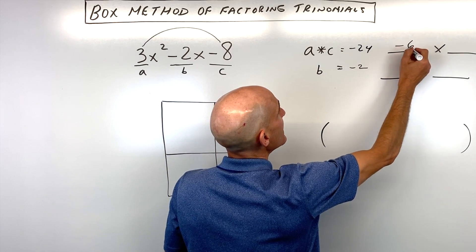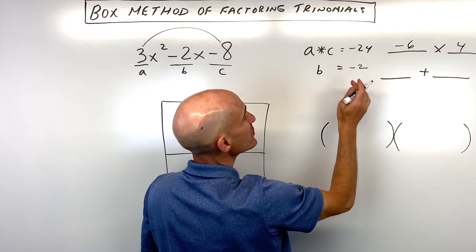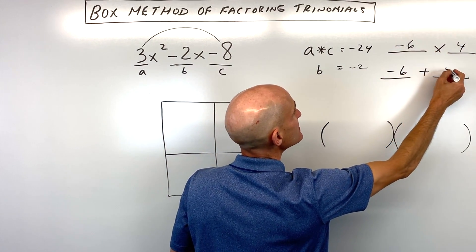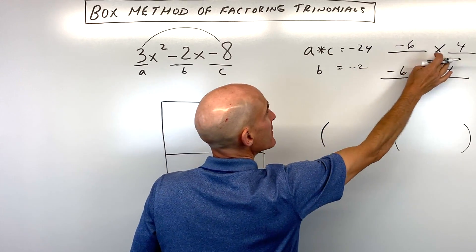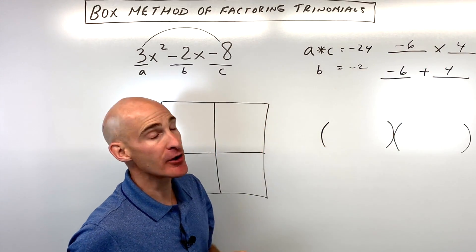So in this case it's going to be negative 6 times positive 4 is negative 24, and negative 6 plus 4 is negative 2. You want to make sure these numbers are the same in both of these scenarios.